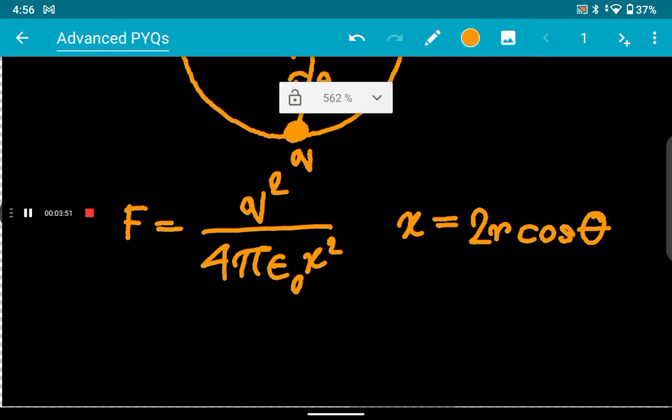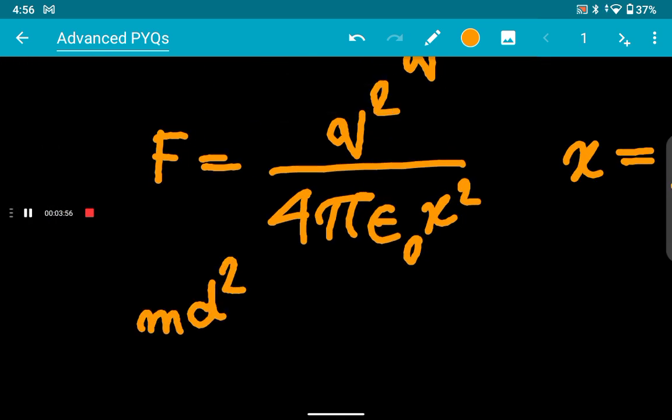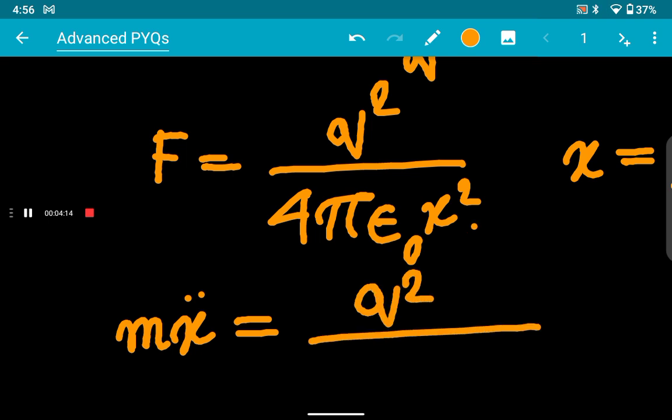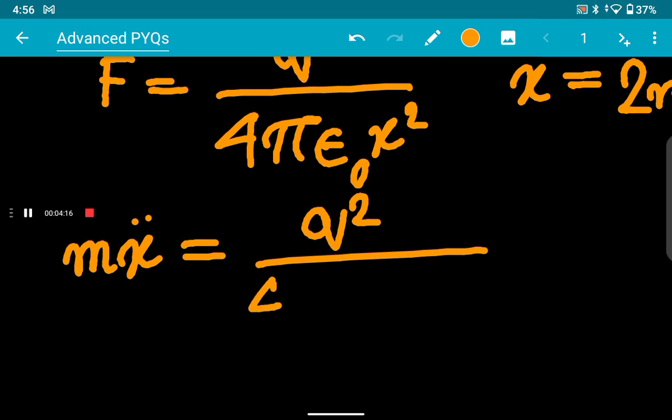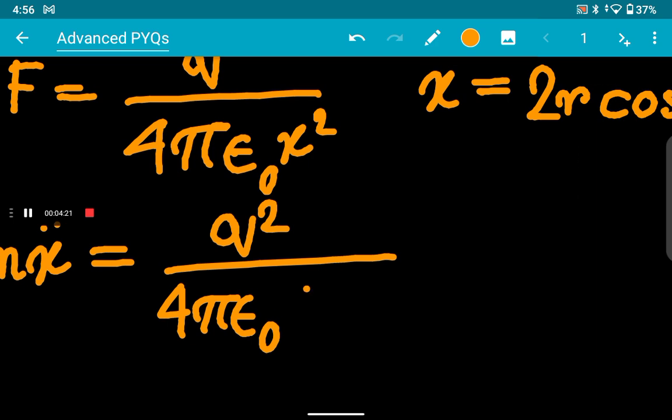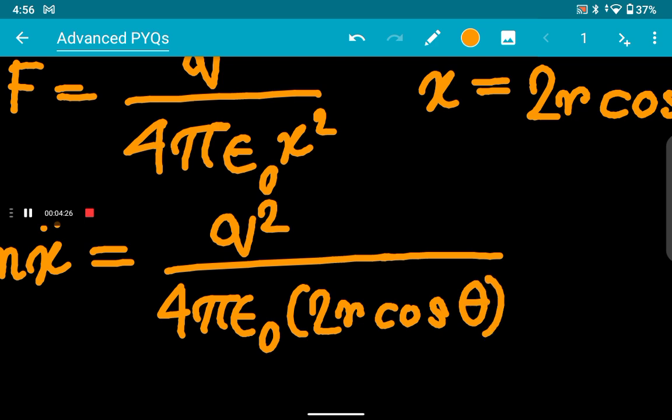Now, F is ma, or let me use the symbolic form, like this. This is your acceleration, so this will be q² divided by 4πε₀, and x is your 2r cos θ, this whole squared.